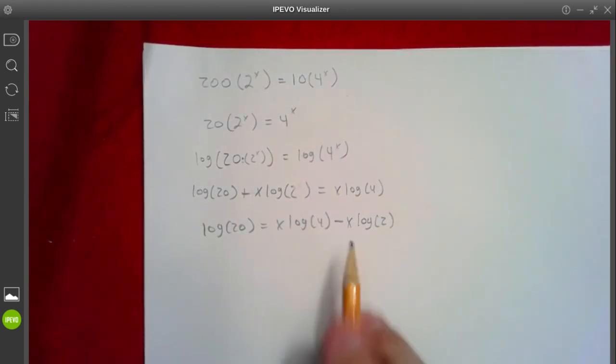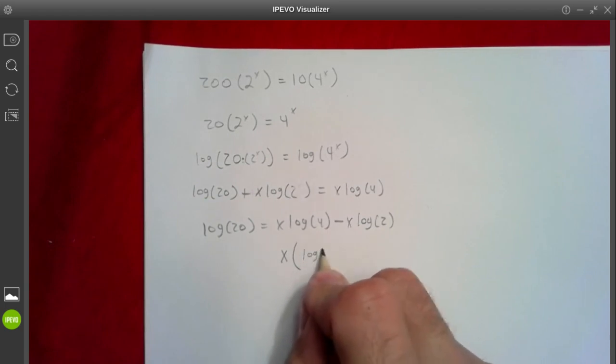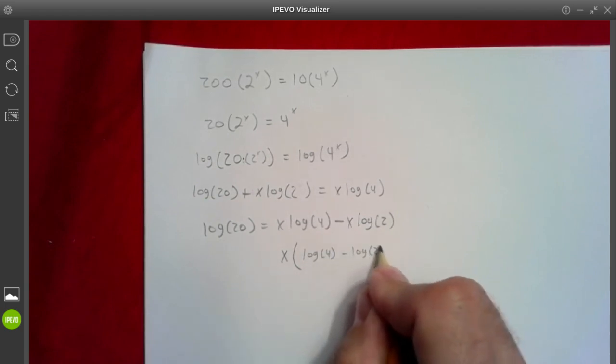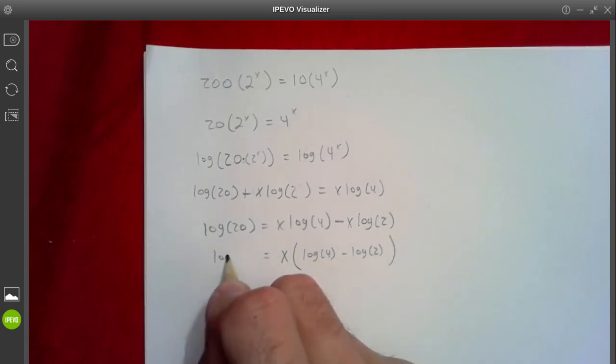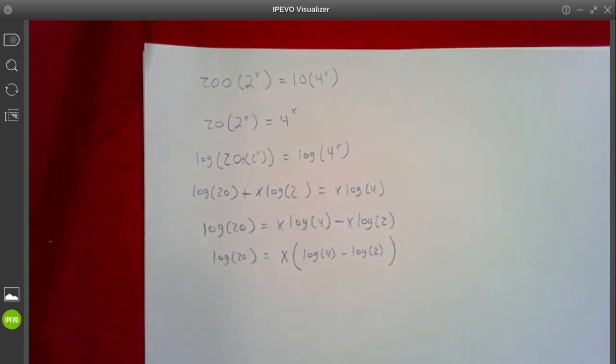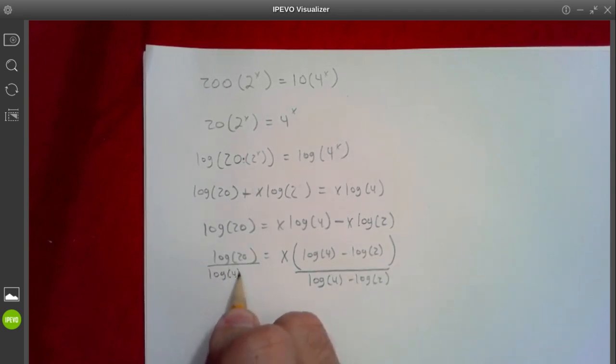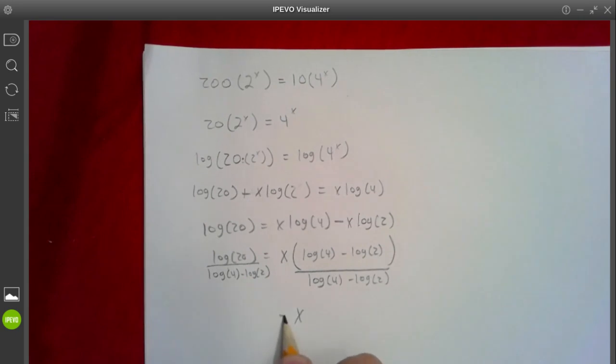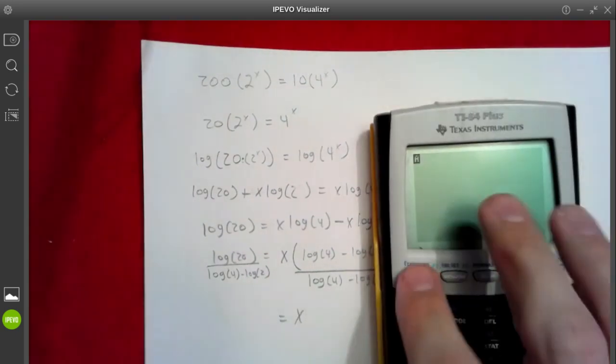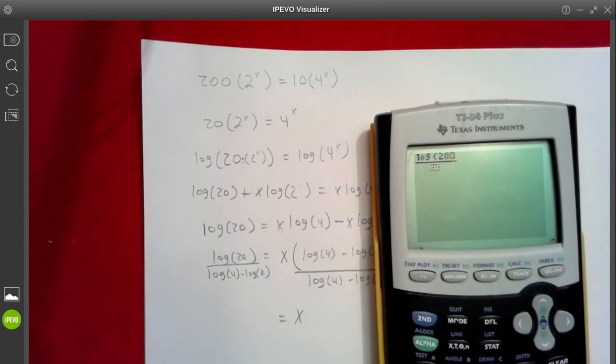Alright, both of them have an x, so we're going to factor out the x. So our answer is going to be this, divided by this. We've got to divide by log 4 minus log 2 to cancel that out. So, log 4 minus log 2. So this is our answer. x equals log 20, log 4 minus log 2.